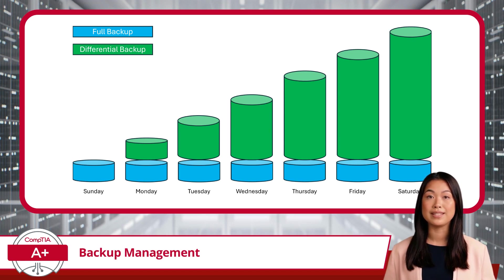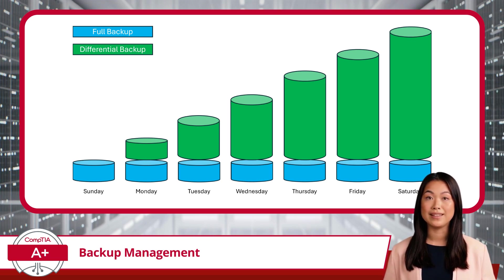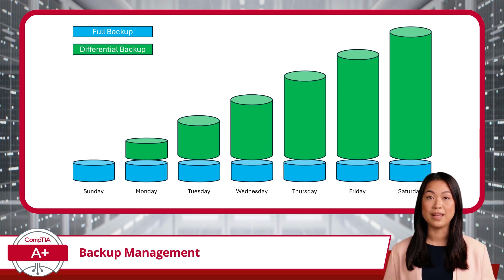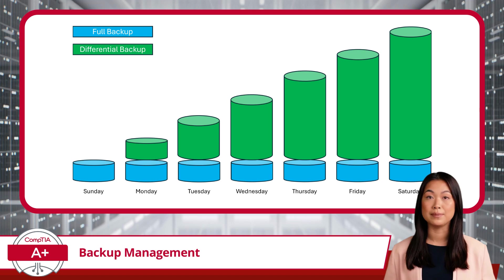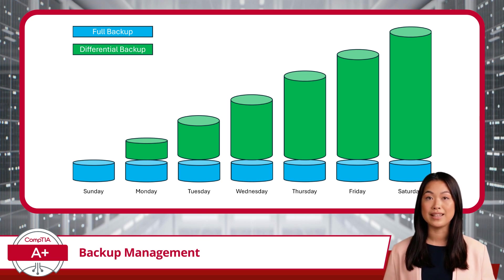With a differential backup, you must retrieve and combine data from two sources, adding a bit of complexity to the recovery process. The trade-off for this added recovery step is efficiency during backup creation. Differential backups avoid copying unchanged data, focusing only on new or modified files. However, as time passes, differential backups can grow larger because they continuously accumulate all changes since the last full backup. For example, a differential backup made five days after a full backup includes changes from days one through five, making it larger than a differential backup taken after a single day. Differential backups are an excellent choice when frequent full backups aren't practical, but simplicity in recovery remains important. They strike a balance between storage efficiency and ease of recovery, offering a middle ground between full backups and incremental backups.